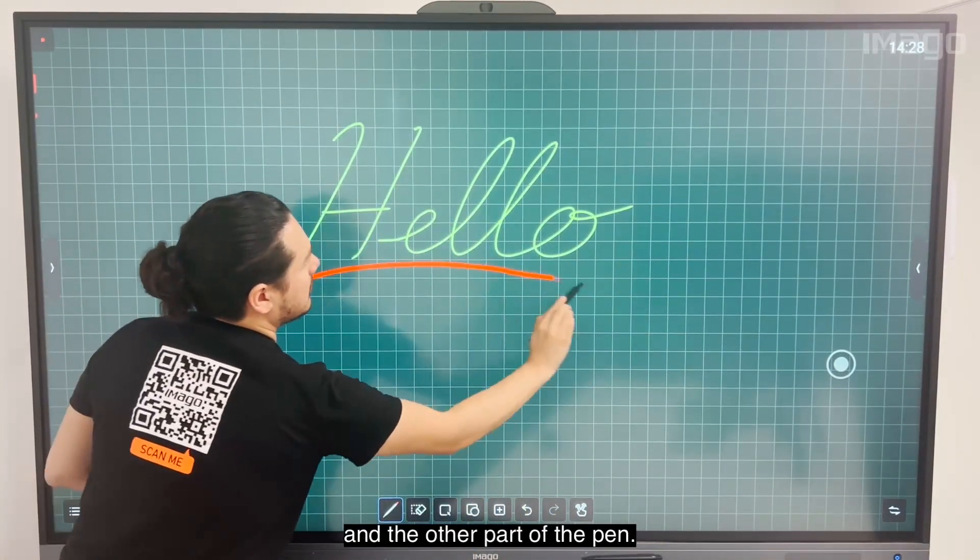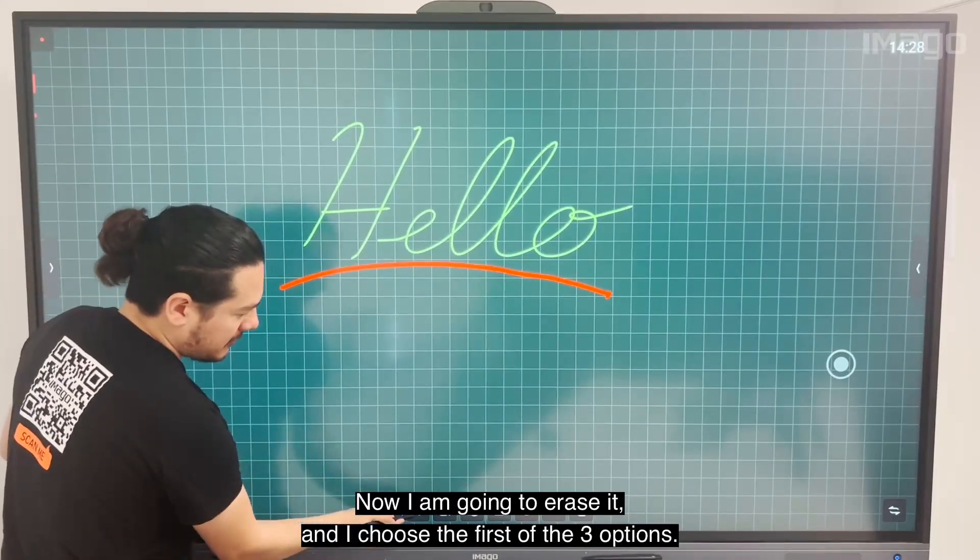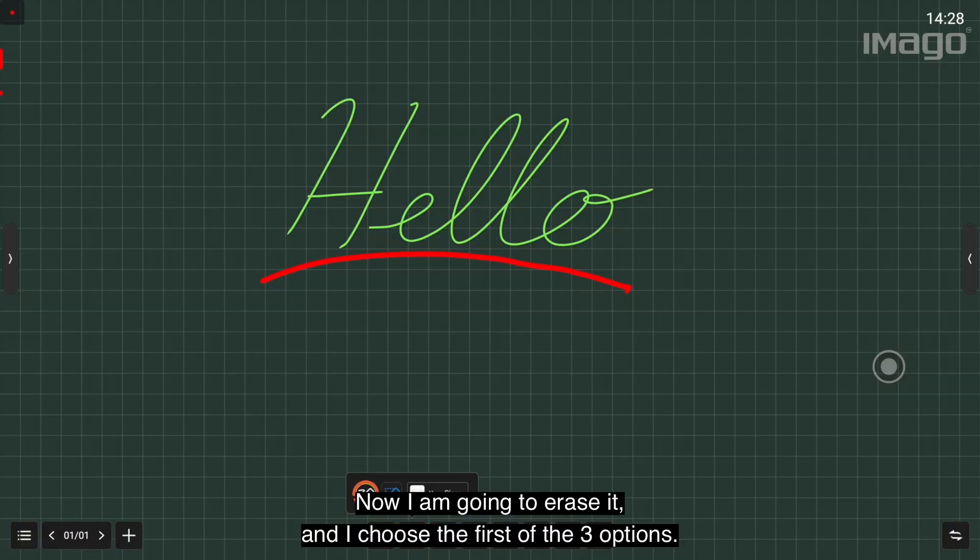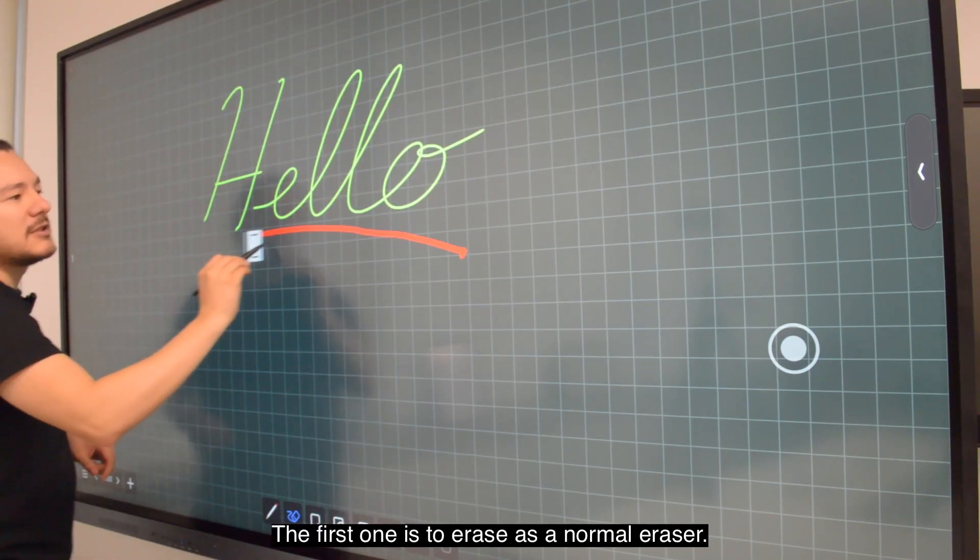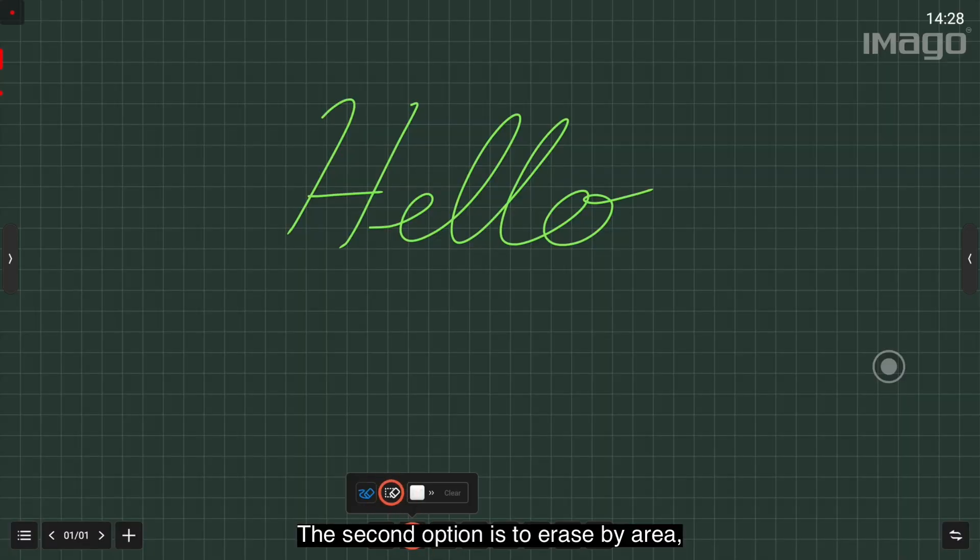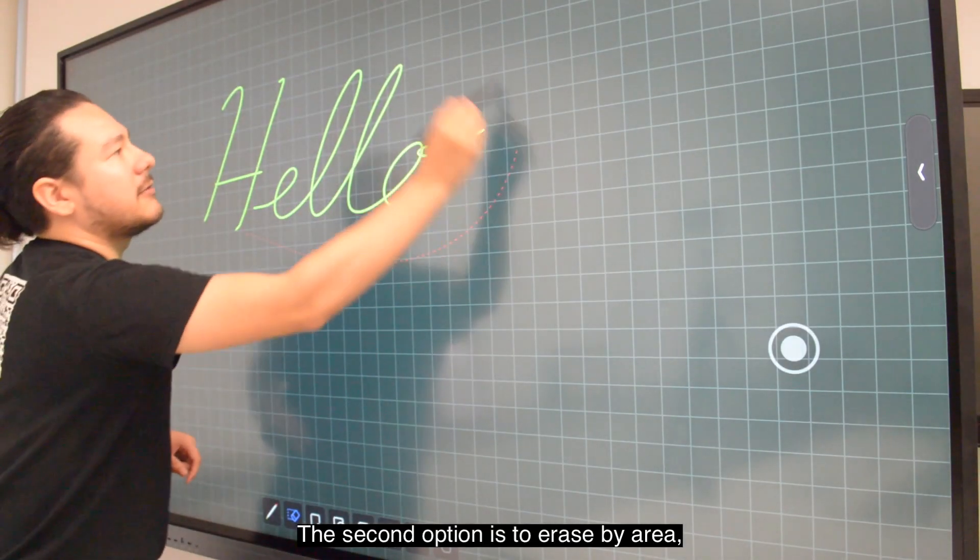Now I'm going to the eraser. I choose the first of three options. The first one is to erase as a normal eraser, the second option is to erase by area, and the third option is to erase everything.